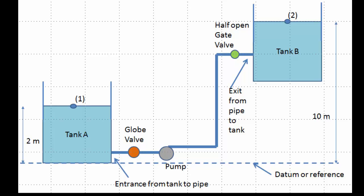Looking at the system diagram, tank A is at a lower level than tank B. A pipe connects tank A first to a globe valve, then to the pump, followed by an elbow, another elbow, a half open gate valve, and then connects to tank B. Location 1 is the elevation of water in tank A at 2 meters, and location 2 is the water level in tank B at 10 meters.